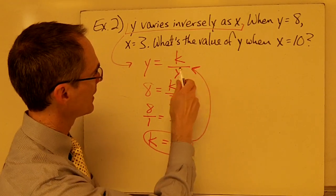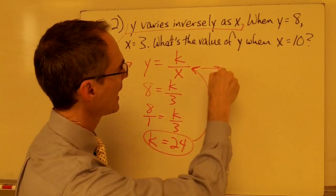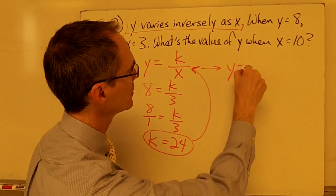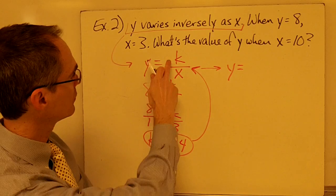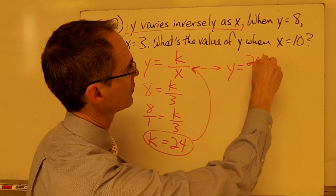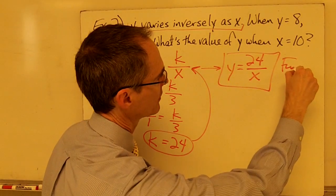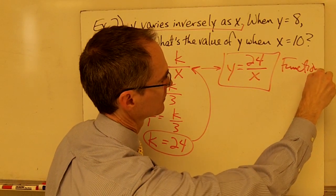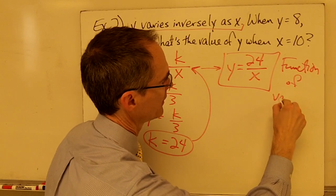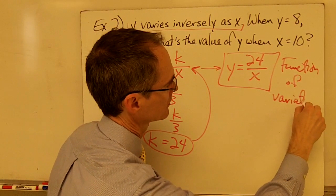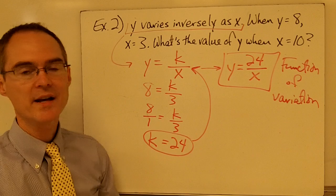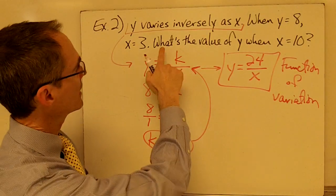Now, I know what my constant of variation is. I plug that into my original formula. And that gives me my function of variation. y equals 24 over x. And again, this is my function of variation. Well, now that I know my function of variation, I can answer this question.